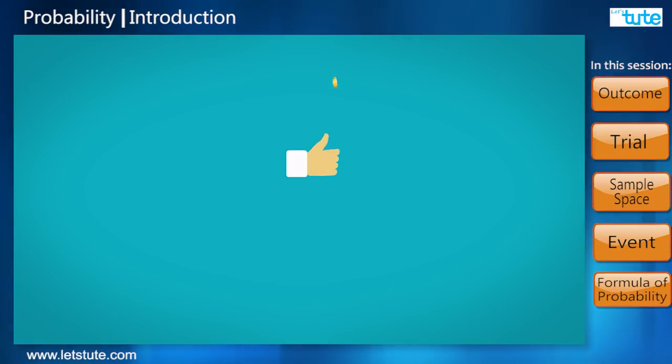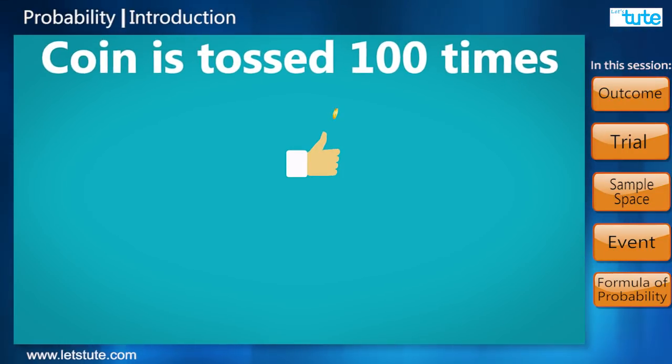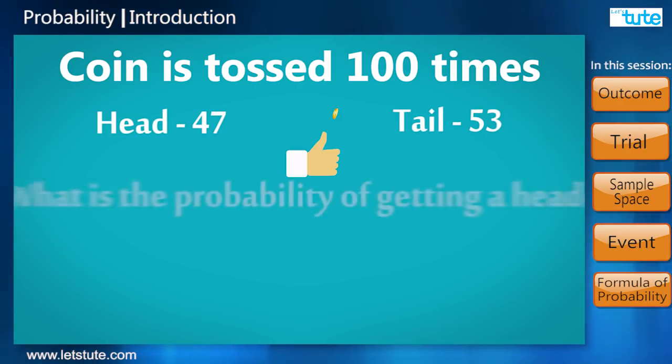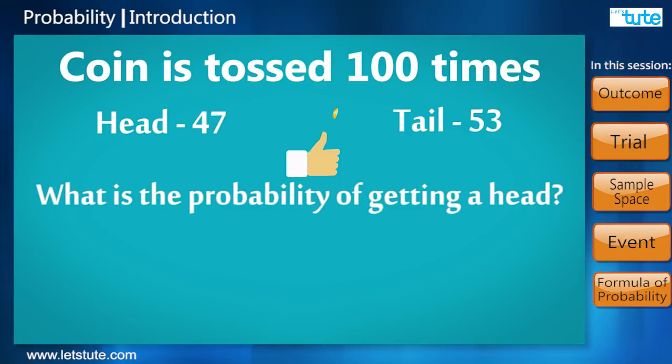You remember tossing a coin at the start of the game? What if the coin is tossed 100 times and the results are head 47 times, tail 53 times? What is the probability of getting a head and that of getting a tail?